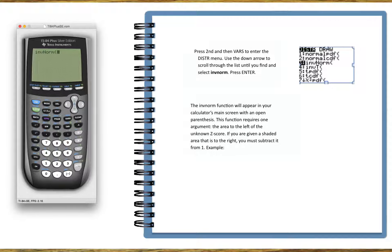So let's look at an example. The area to the left of z is 0.15, and we're trying to find z. So we have INVNORM open.